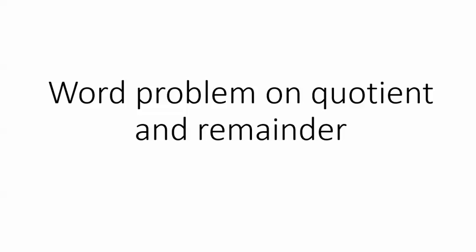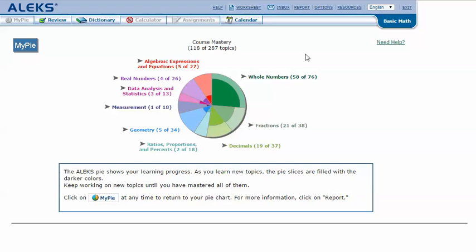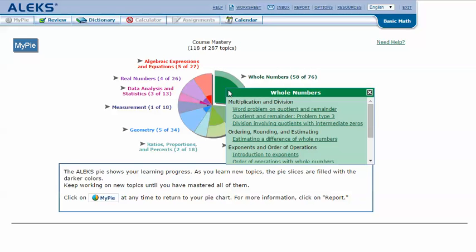Word problem on quotient and remainder. In your ALEKS Pie, mouse over the dark green slice Whole Numbers to reveal the drop-down list of topics you need to cover. Click on word problem on quotient and remainder.